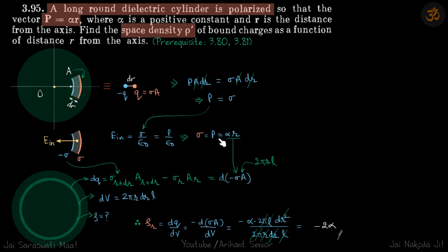Putting σ = αr and A = 2πrl, since α, 2π, and l are constant, inside we have d(r²) = 2r·dr. This cancels with the denominator, and π and l also cancel, leaving ρ(r) = -2α.